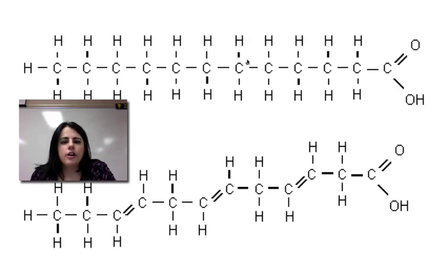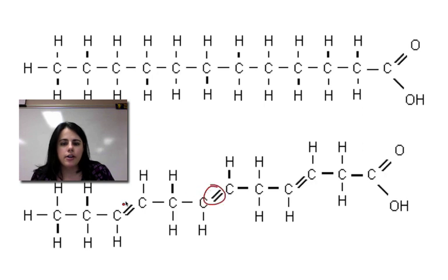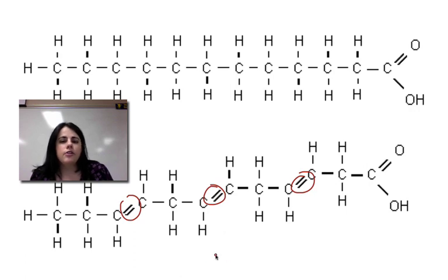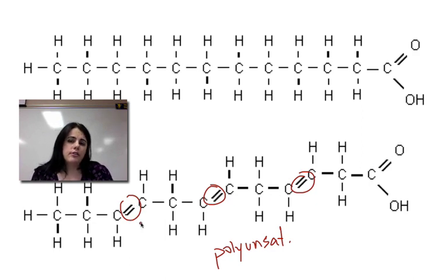Here's your fatty acids again. Notice there's no double bonds in this carbon chain, so this one is a saturated fatty acid — not very healthy for you. But down here, we actually have three carbon-carbon double bonds. That allows it to kink or bend, and that's healthier. Because there's more than one, we call it a polyunsaturated fat — healthiest for you. If there's only one, we call it a monounsaturated fat.